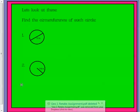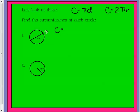Find the circumference of each circle. So if we look at this one, what do they give us? The diameter. The diameter equals 70 inches.